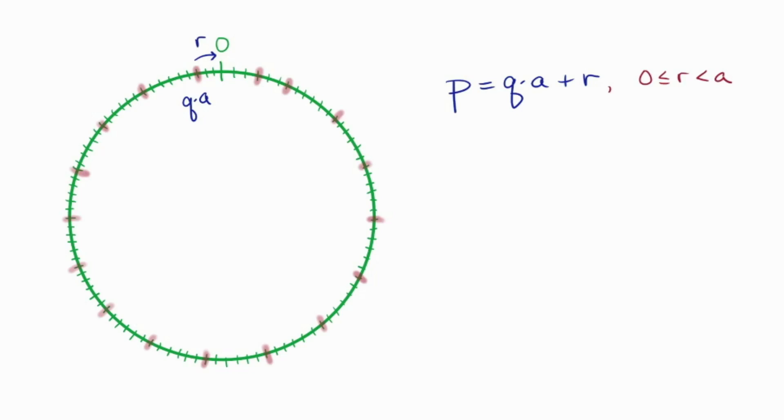In particular, the remainder always lies between 0 and a. On the modular clock, what this means is that qa is near 0, and r is the little extra distance you have to go. The point is that r is smaller than a, and we found a multiple of a whose distance from 0 is small.